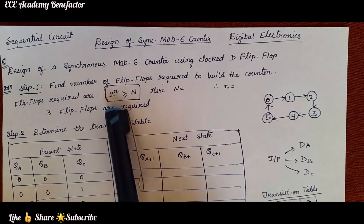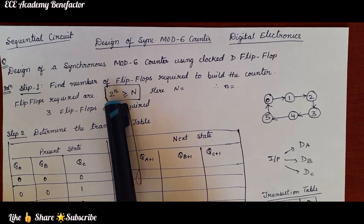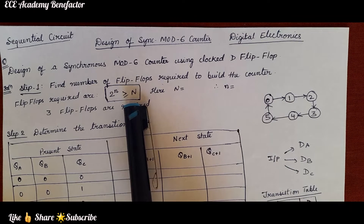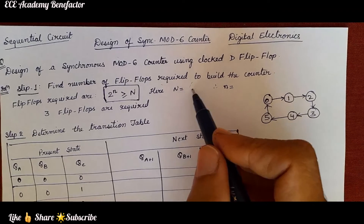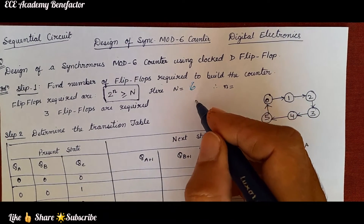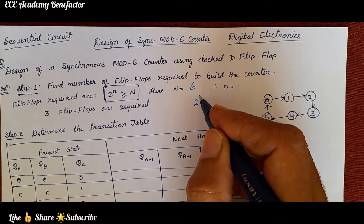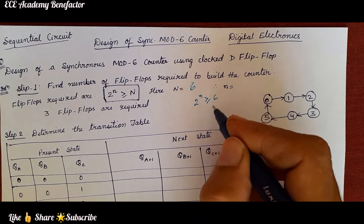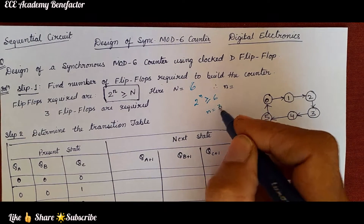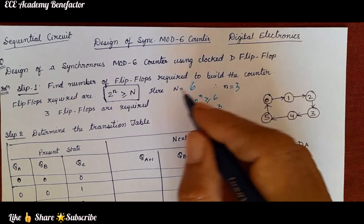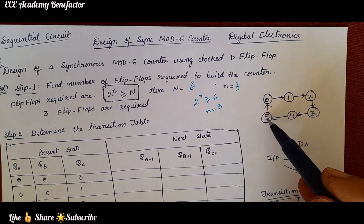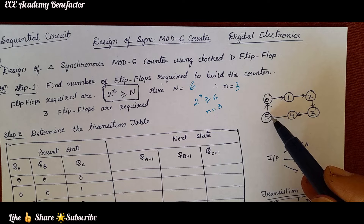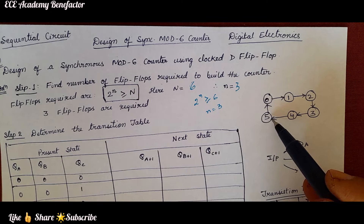The number of flip-flops required can be derived using the formula: 2 to the power n should be greater than or equal to capital N, where N is 6. So 2^n ≥ 6 gives n = 3. Either use this formula, or look at the largest number and find the minimum bits needed to represent it. Either way, we need 3 flip-flops.